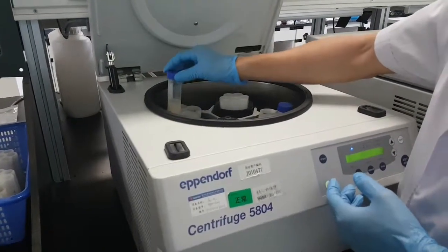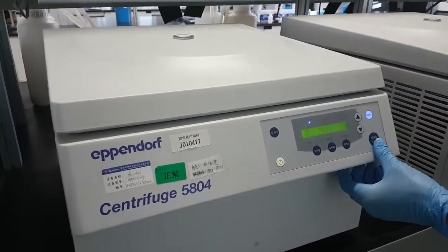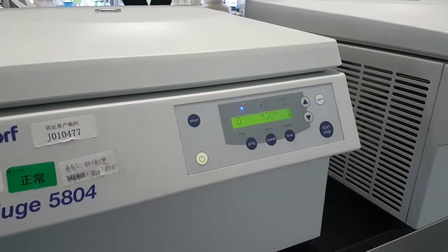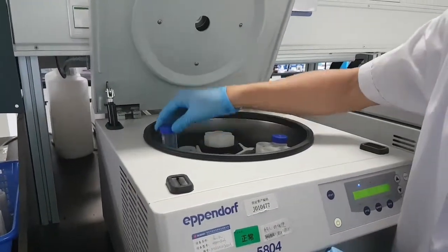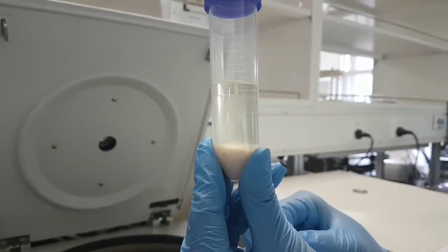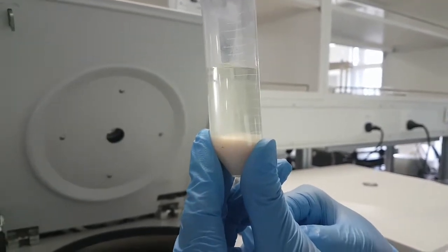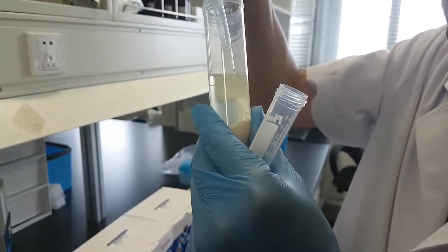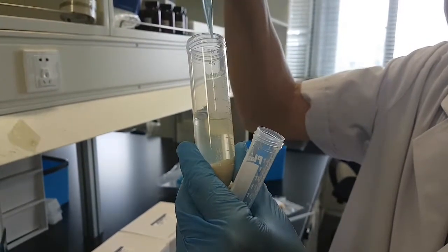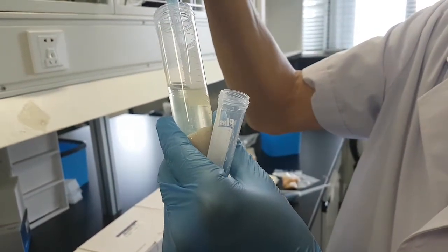All right, now we take out our sample and we can see here the supernatant very clear. Now we take two milliliters of the supernatant, only the supernatant, and put it into a 15 milliliter centrifuge tube.